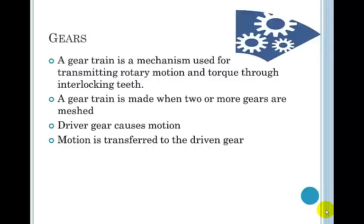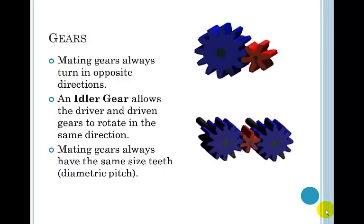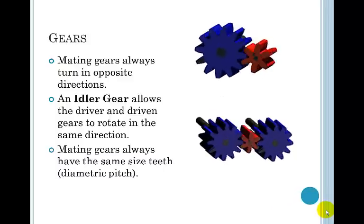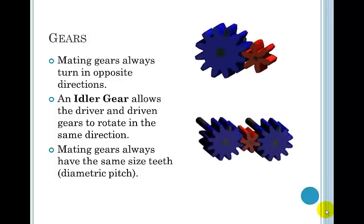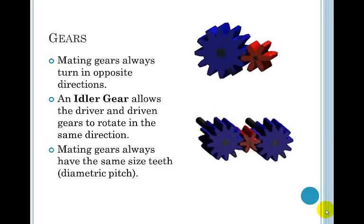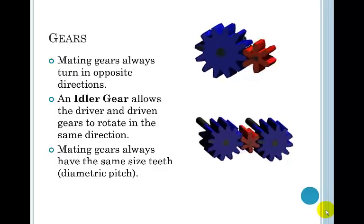So a gear train is a mechanism we use to transmit or move rotary motion and torque through interlocking teeth. A gear train is mated anytime we put two or more gears together. And we say the driver causes the motion and the driven has the motion transferred to it.